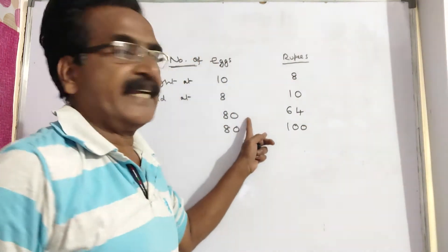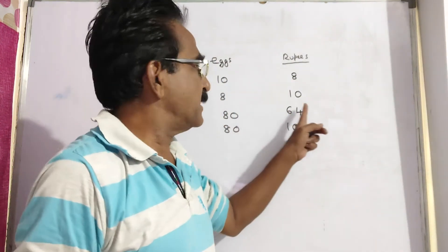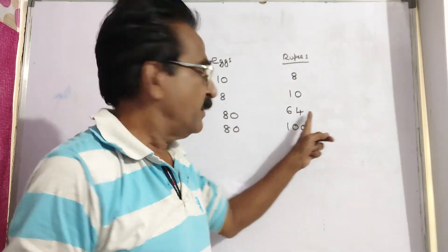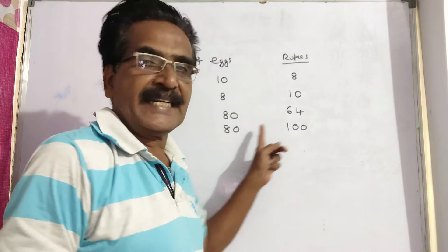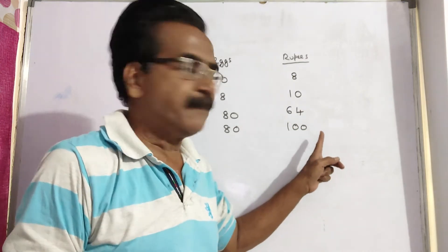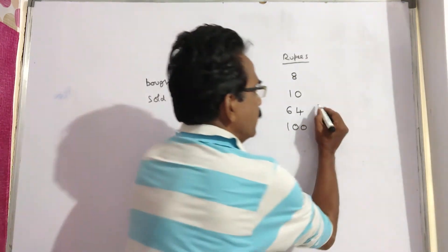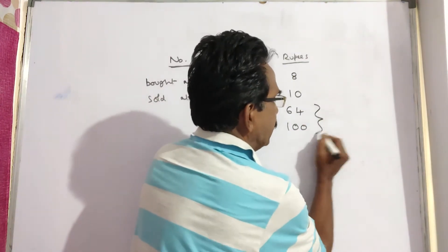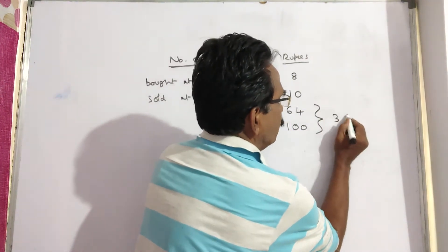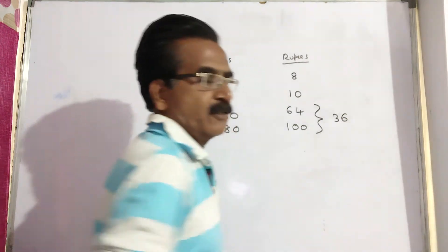So, 80 eggs: cost price 64, selling price 100. Here we are getting a profit of 36 rupees.